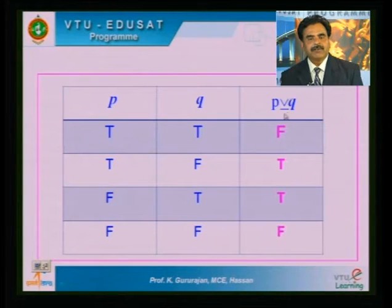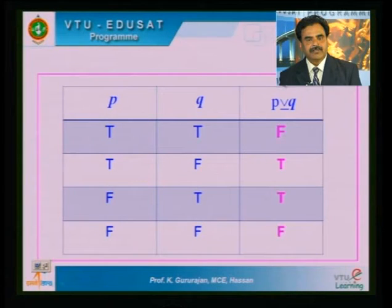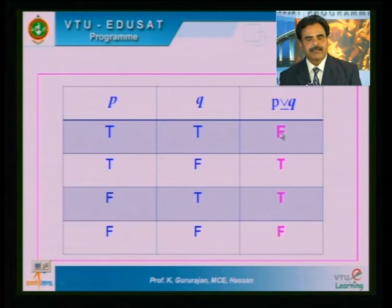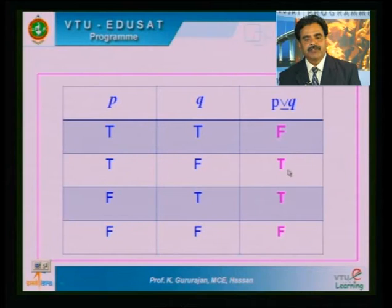The exclusive OR symbol stands for: either P is true or Q is true, but not both. So when P and Q are both true, P XOR Q is false; when both are false, P XOR Q is also false. When exactly one of P or Q is true, P XOR Q is a true proposition.